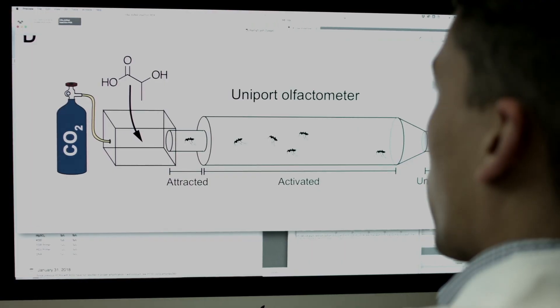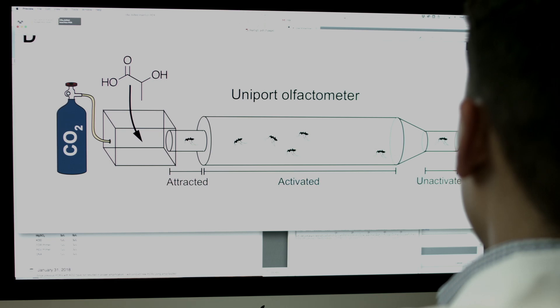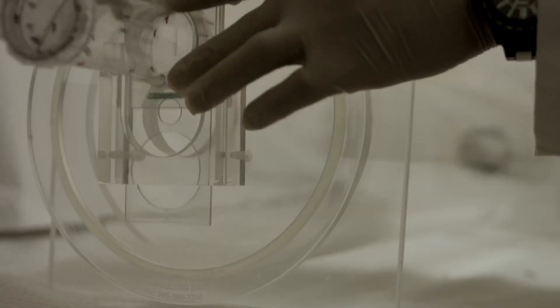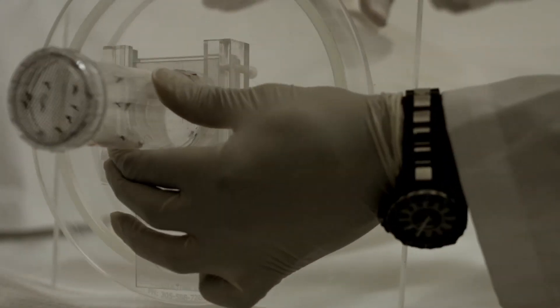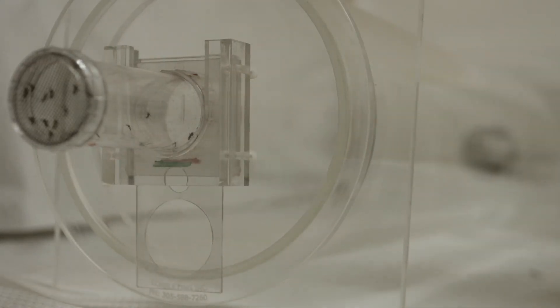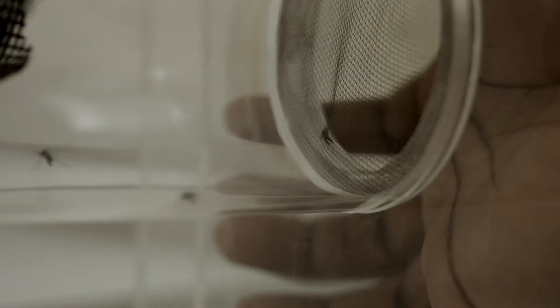In this olfactometer assay, we allow our subjects to put their hand in one of the box vents, and then heat and CO2, we blow over the arm and then blow the cues down the olfactometer chamber. And then from the other end, we release the mosquitoes. So the mosquitoes are able to fly upwind, and a normal wild type mosquito can smell human odor, and they can track it down to where the source is. But our mutants have trouble finding this human odor.